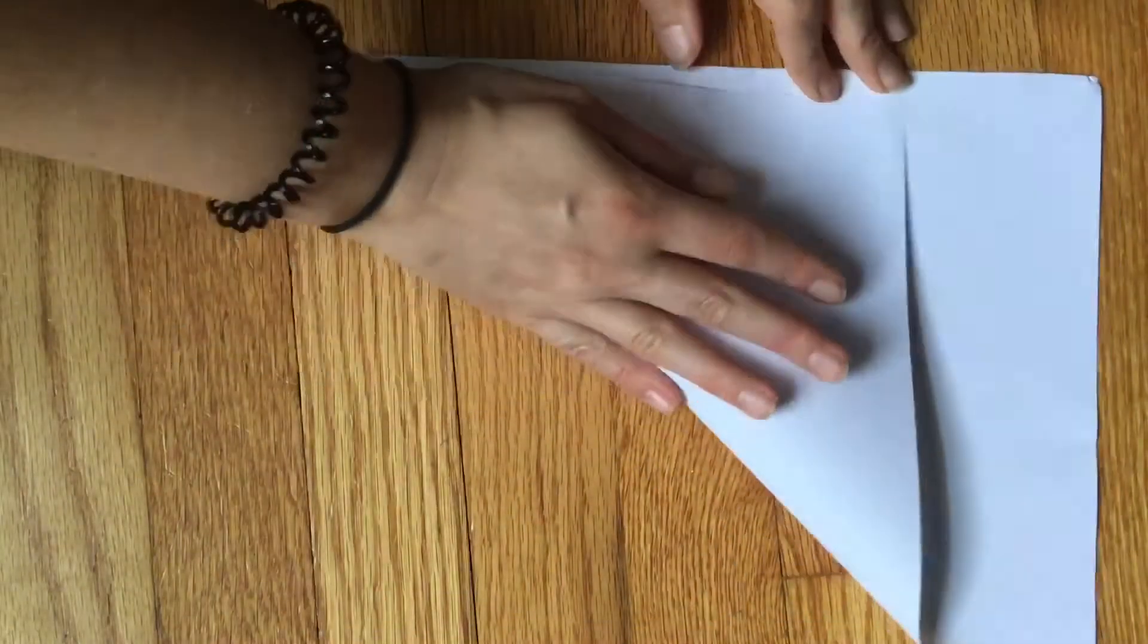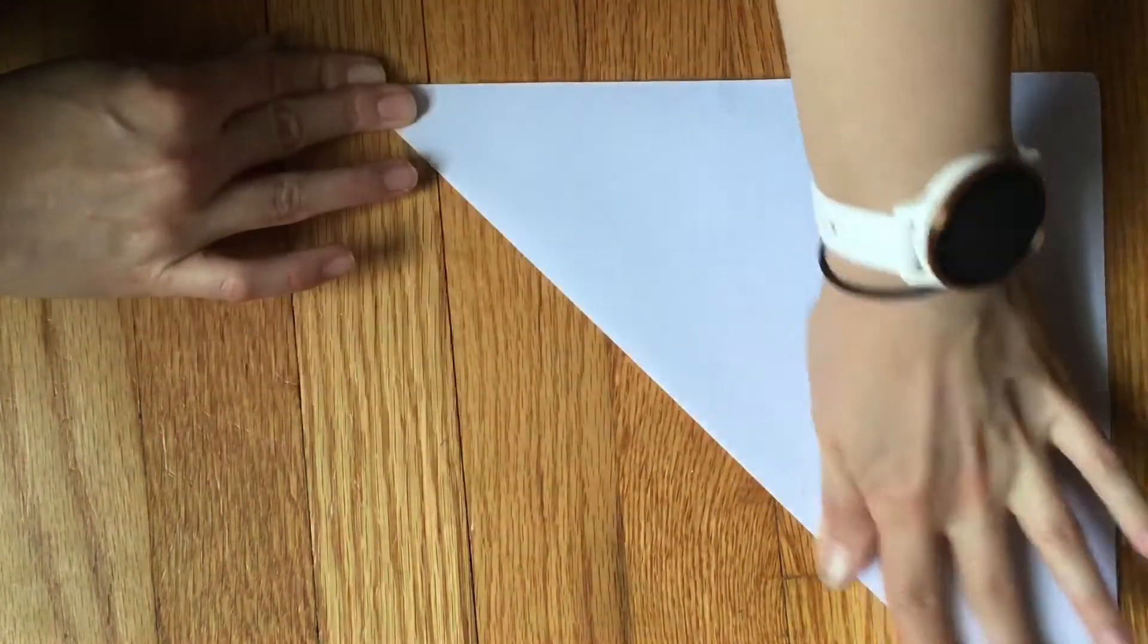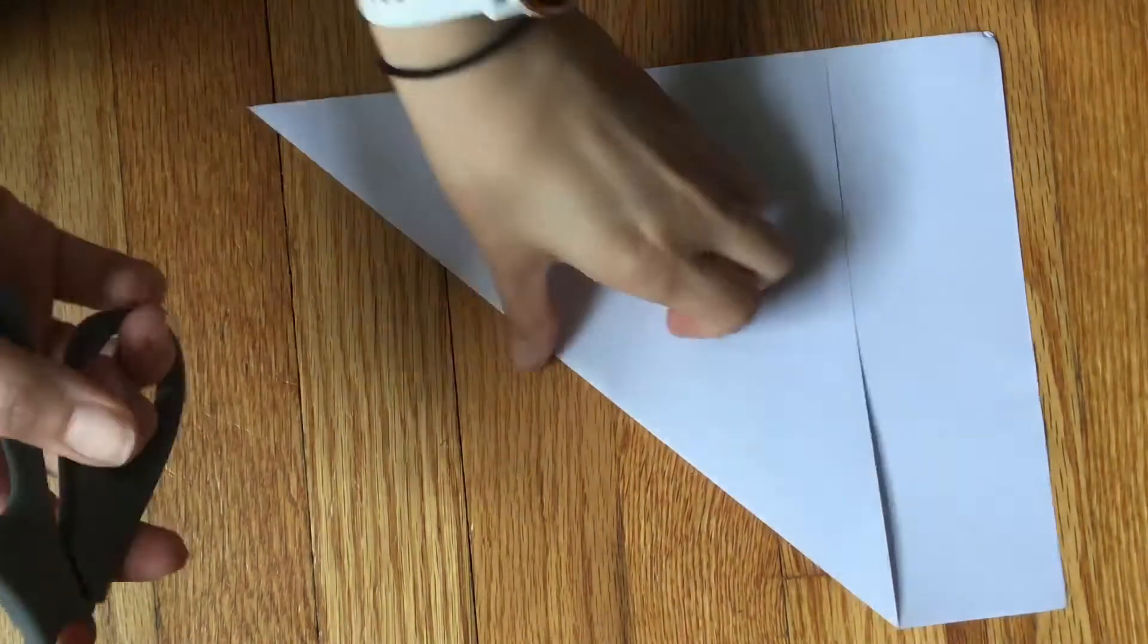Start with rectangular paper and fold one of the short ends over to meet the long end, creating a diagonal fold. Use your scissors to cut off the extra.